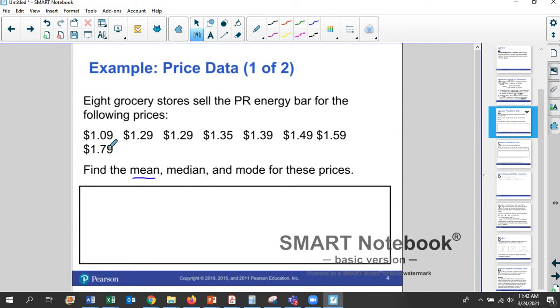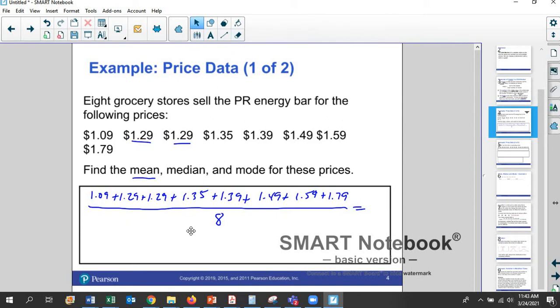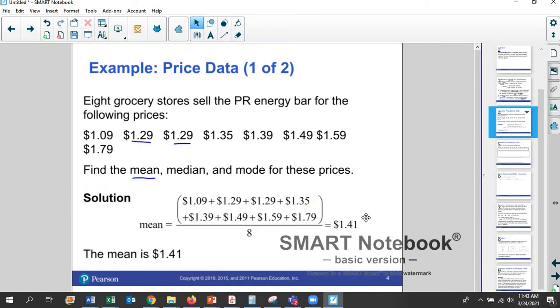So how do you find the mean? You add all eight of these numbers up together. 1.09 plus 1.29 plus 1.29 plus 1.35 plus 1.39 plus 1.49 plus 1.59 plus 1.79. You add up all of those, how many are there? There are eight total values. Even though this value gets repeated, we still count it. And so we get eight, and we divide by eight. If you guys plug that into your calculator, then you'll find the value. And in this case, I've already got it done here. The value is $1.41. Round it off. And so we have the mean is equal to $1.41. So the average price, if you will, over those eight grocery stores for the PR energy bar is $1.41. As far as what we think of as typical averages, that's a mean.